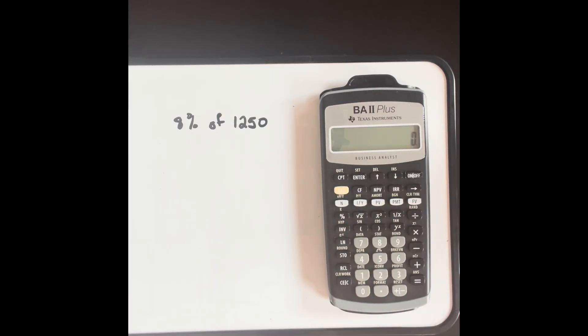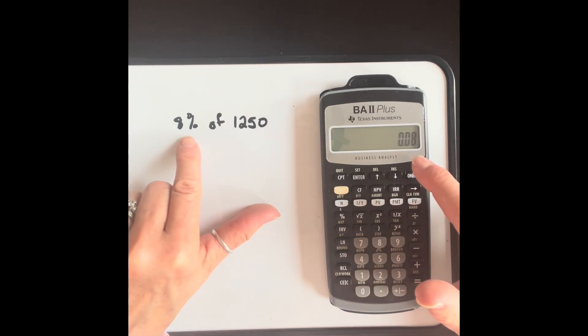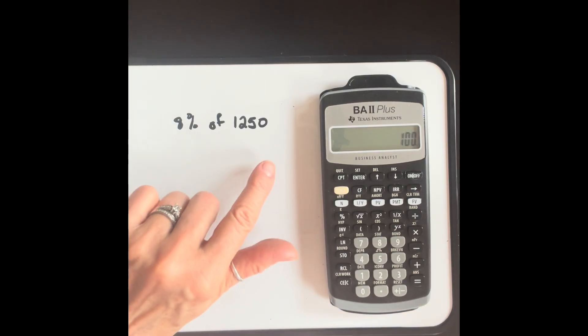Now let's talk about the percent key. There's a variety of ways that you can use it. One would be to find a specific percent of a number. And so in order to do that, enter your number, 1250, multiply by 8%. When you press the percent key, it will change 8% to a decimal, but now complete the calculation by pressing equals. So 100 would be 8% of 1250.